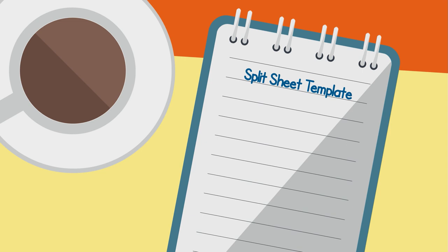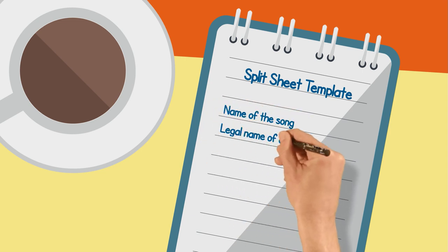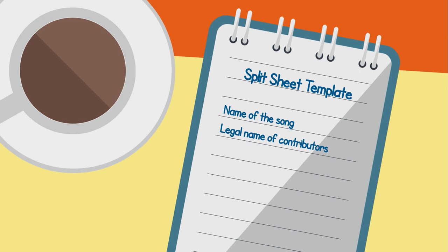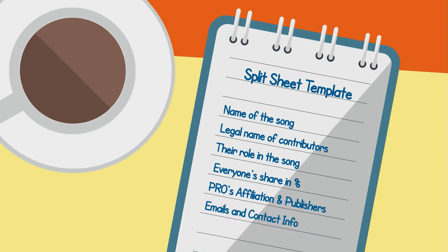Each split sheet should include: the name of the song; legal name of the contributing writers involved; their role in the song creation, whether they are songwriter, producer, band member, etc.; share of the songwriters' percentage of the song and/or the share of the producers' percentage of the song; performing rights organization affiliation and publishing company if available; mailing address and contact information; and the signature of each writer or producer.